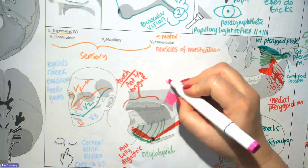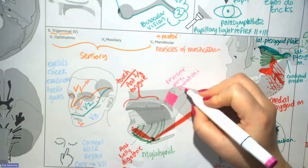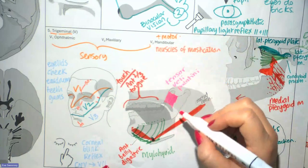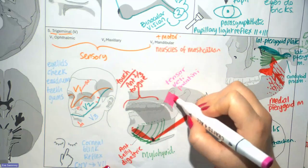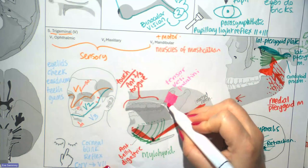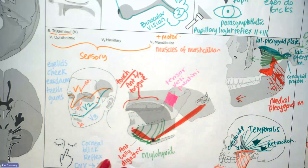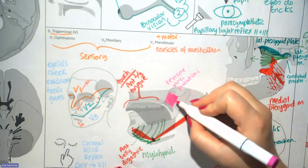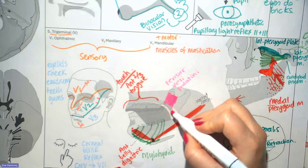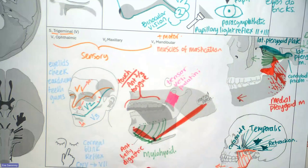The relevant muscle here is the tensor veli palatini. Veli means soft, palatini refers to the palate, and tensor means to tense it. This muscle innervated by V3 helps to tense the soft palate. It runs laterally, and by contracting it pulls on either side of the soft palate. It attaches to the medial pterygoid plate and runs into the palatine aponeurosis.